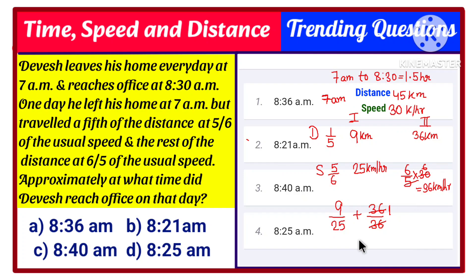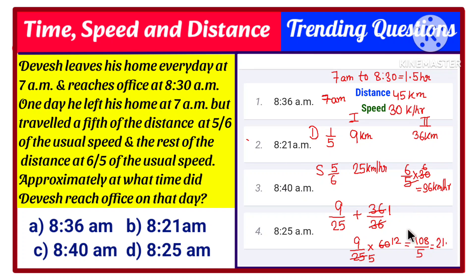Converting 9/25 hours into minutes by multiplying by 60: (9 × 60) / 25 = 540 / 25. Cancelling by 5 gives 108/5 = 21.6 minutes, approximately 21 minutes. So the total travel time is approximately 1 hour 21 minutes. Since Devis started at 7 AM, adding 1 hour 21 minutes gives us 8:21 AM as the final answer — that is option number 2.